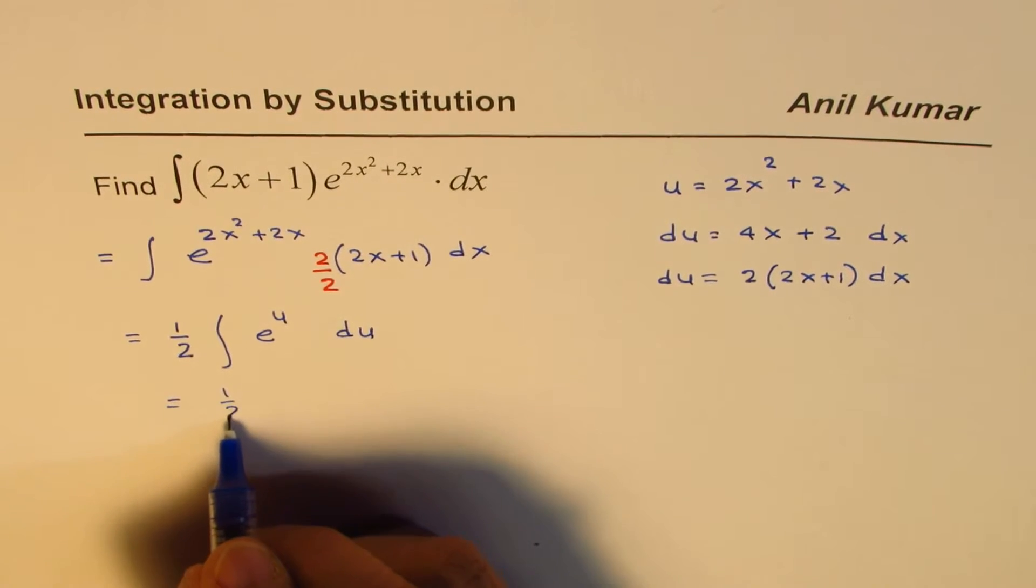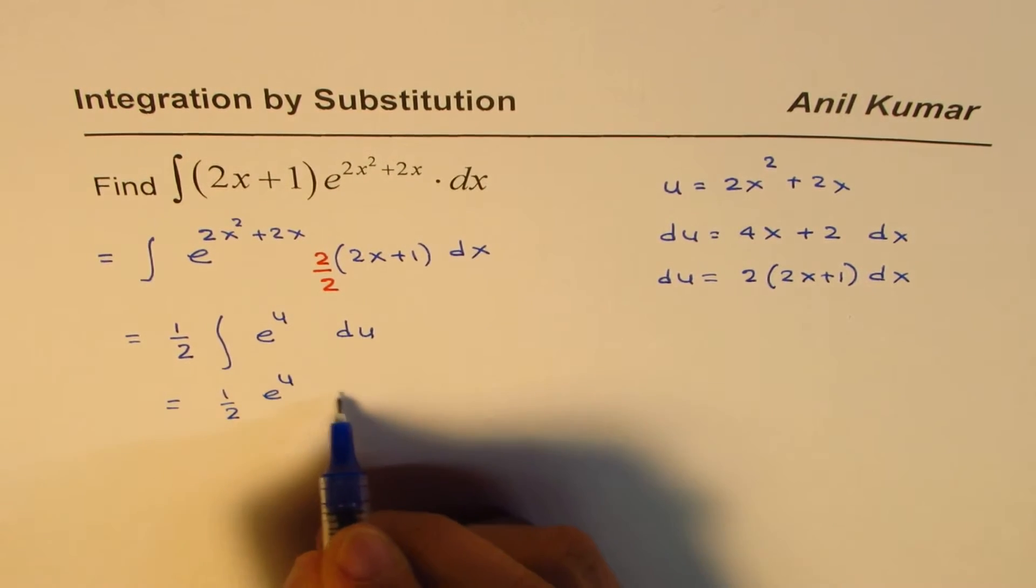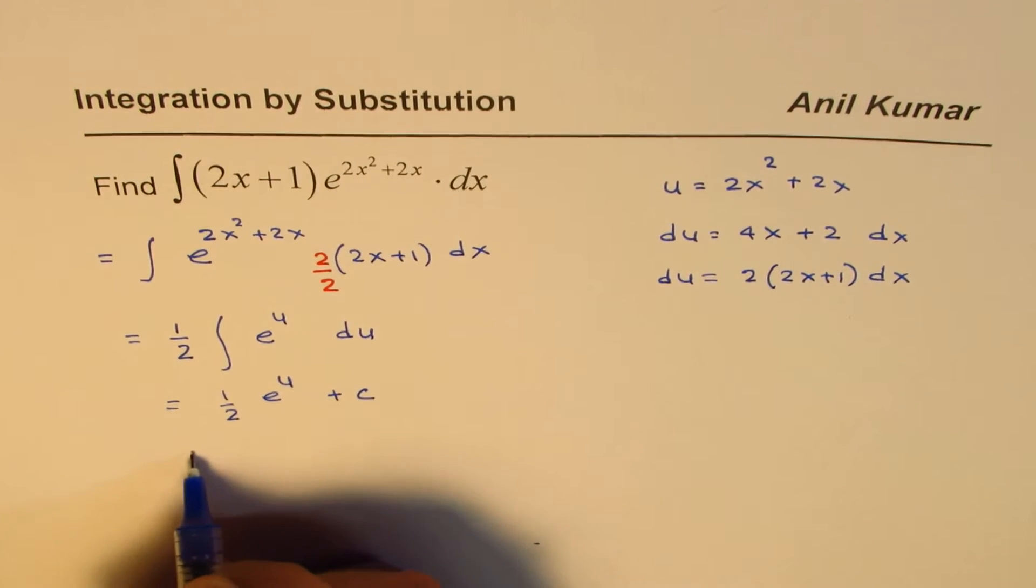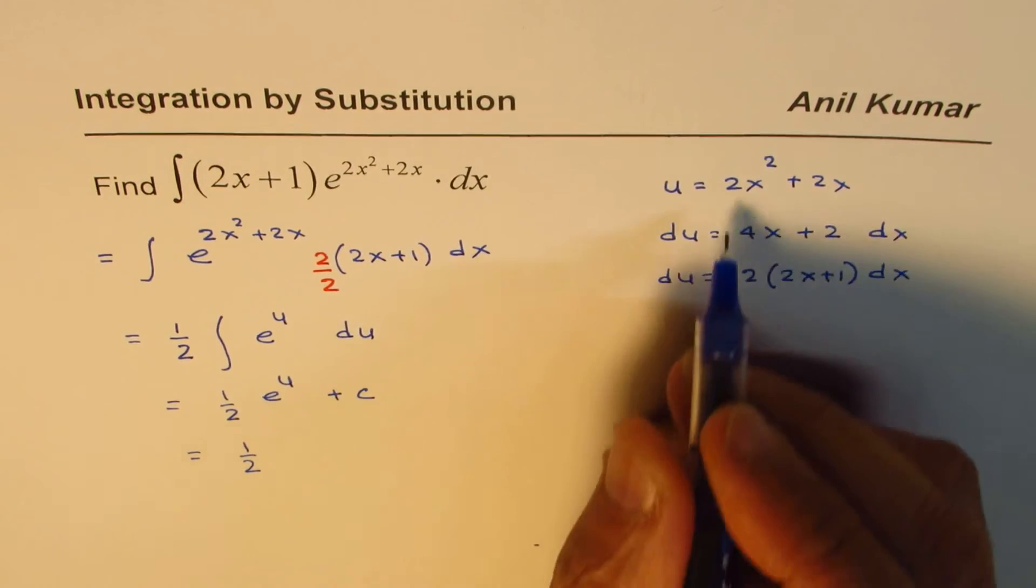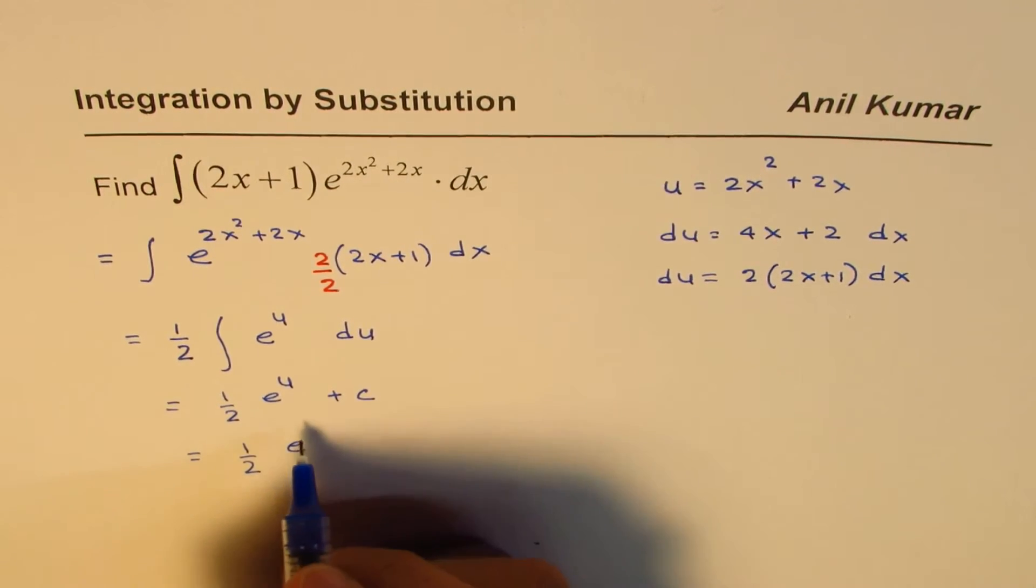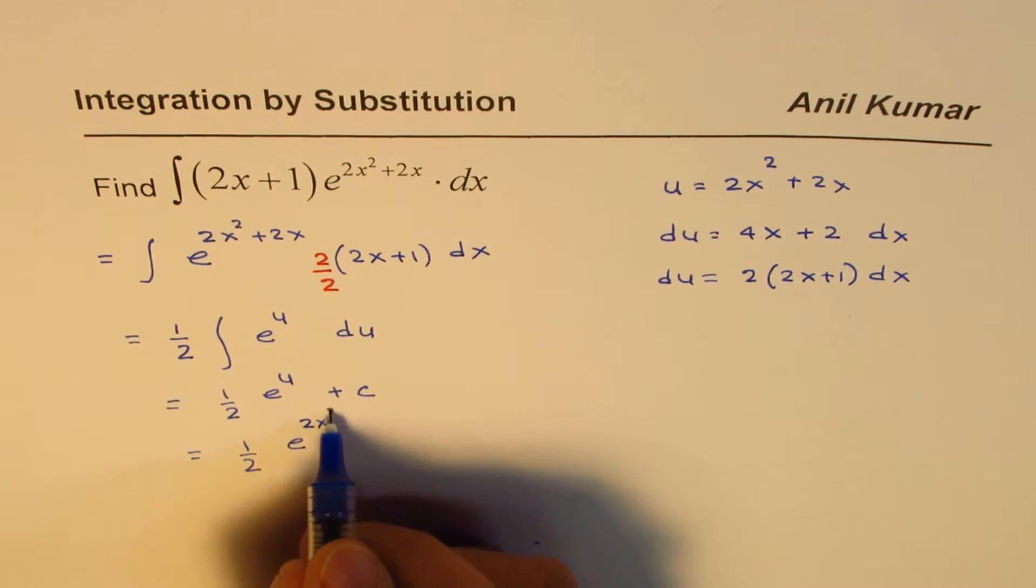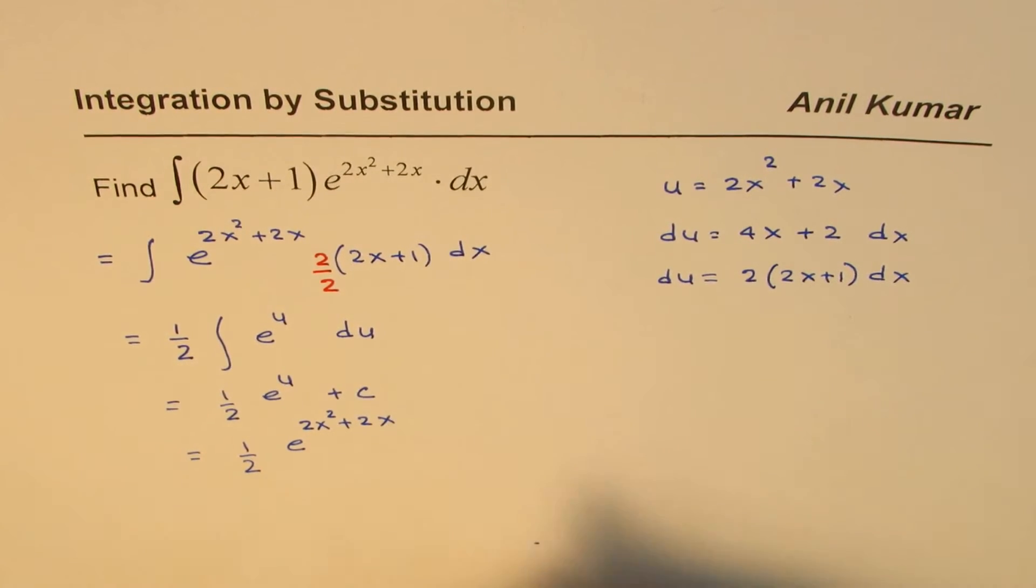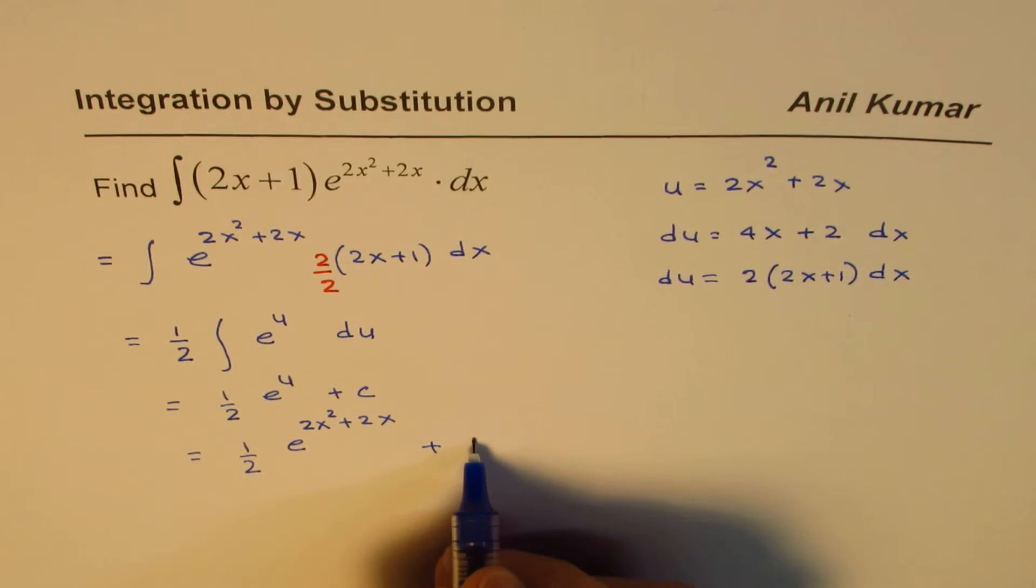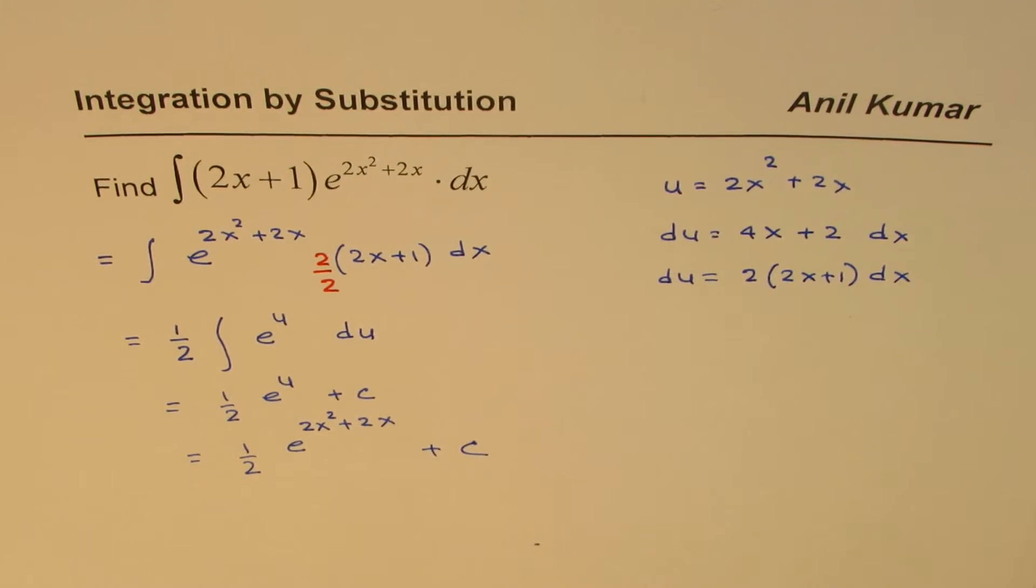Now this could be written as half e to the power of u plus c. Replacing u with what we substituted, we have half e to the power of 2x squared plus 2x as the result of this integral. So that is how you could do it.